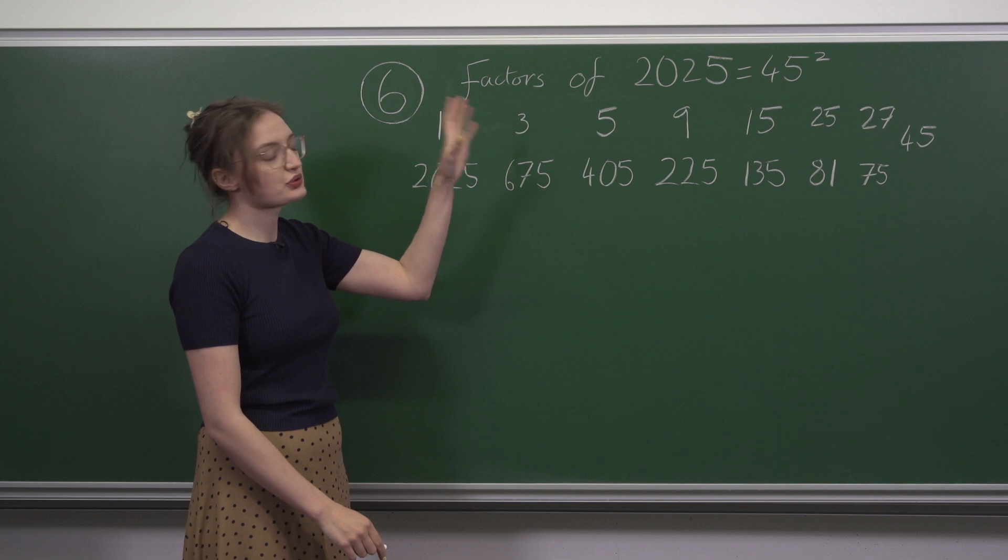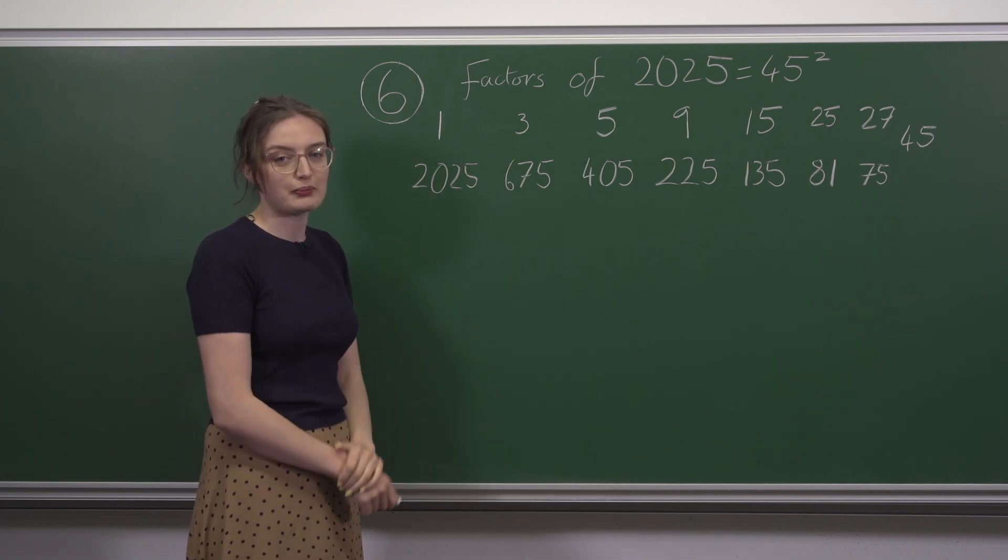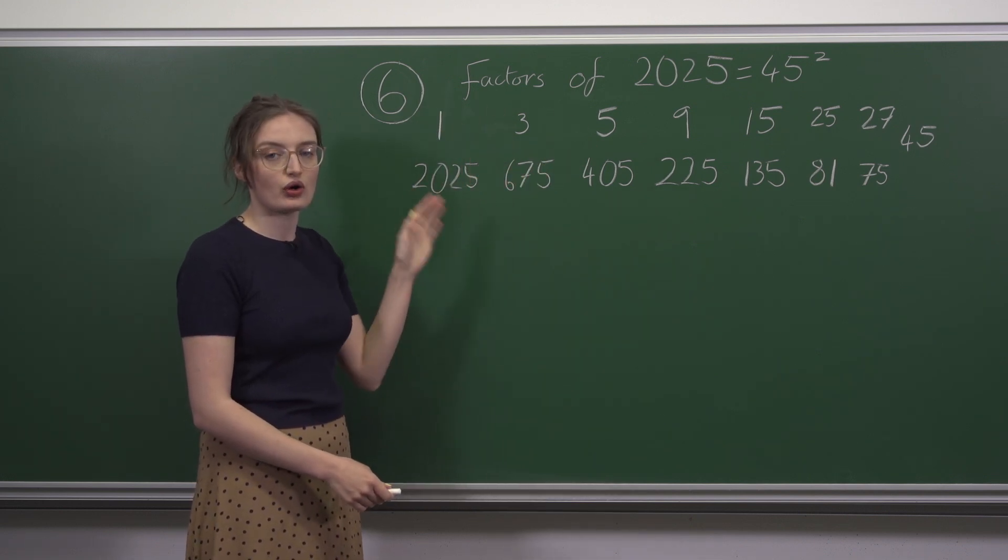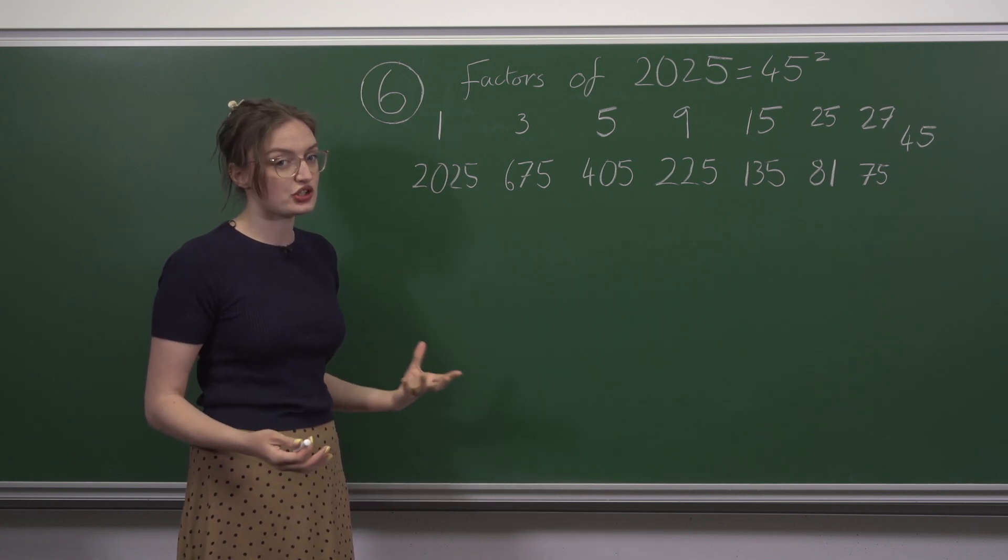In question 6, we're given 2025 as an example of a number whose factors sum to an odd number. This is a bit rarer than you'd expect.